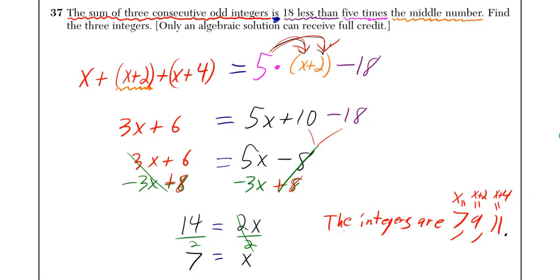Alright, so what we do from there, we divide by 2, divide by 2, x is equal to 7. So the three integers are 7. Well, then 7 plus 2 is 9, and 7 plus 4 is 11.